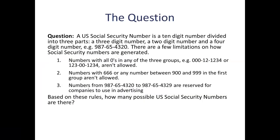In the United States, a Social Security number is a 9-digit number divided into three parts: a three-digit number, a two-digit number, and a four-digit number. For example, 987-65-4320.